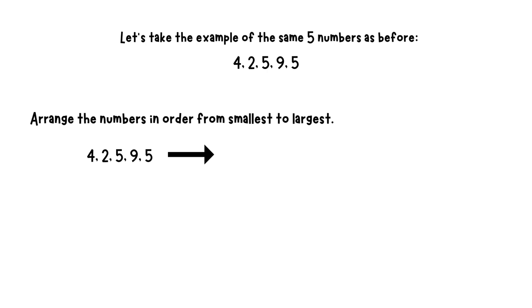Arrange these numbers in order from smallest to largest. When arranging into ascending order we get 2, 4, 5, 5, 9. Now find the middle number. In this case, the middle number is 5, so the median is 5.